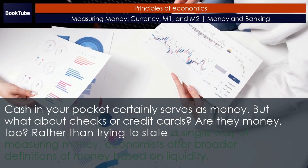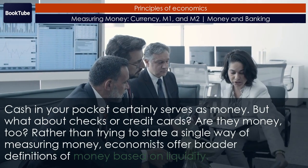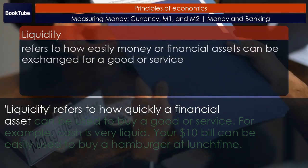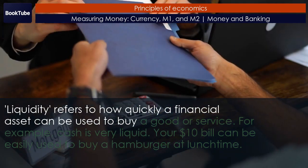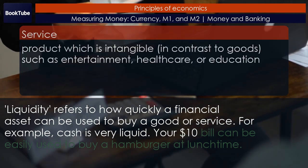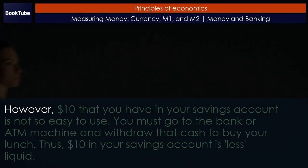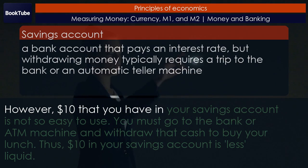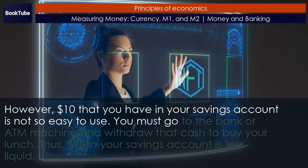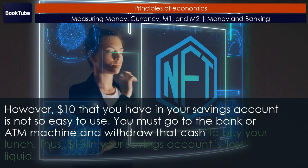Rather than trying to state a single way of measuring money, economists offer broader definitions of money based on liquidity. Liquidity refers to how quickly a financial asset can be used to buy a good or service. For example, cash is very liquid — your $10 bill can be easily used to buy a hamburger at lunchtime. However, $10 that you have in your savings account is not so easy to use; you must go to the bank or ATM and withdraw that cash to buy your lunch.